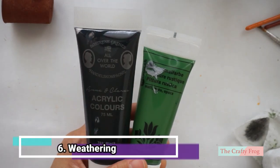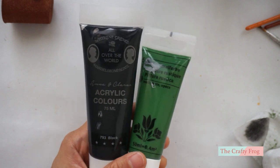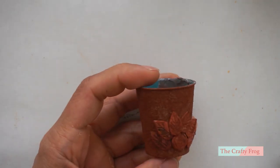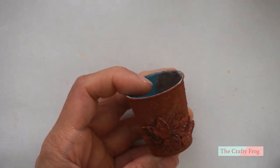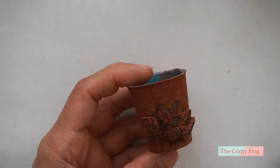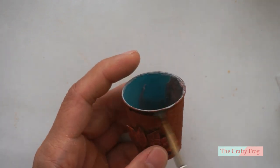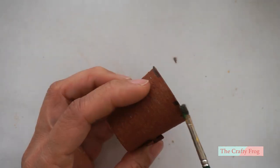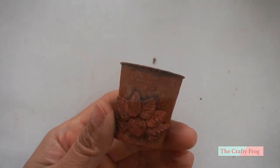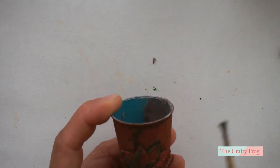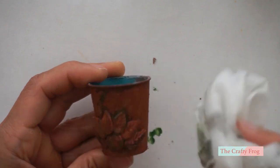To give the pot some life, I added black and green mixed together and watered it down to create a weathered effect. I am still in the process of learning this technique, so this is not the best example. Anyway, I started with black concentrating on the leaf and wiping out the excess with wet wipes. Then I added some green and again wiping the excess with wet wipes. Do this until you are satisfied with the outcome, then set it aside to dry.